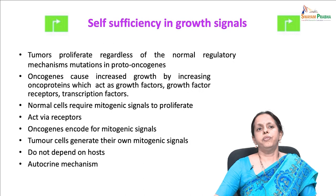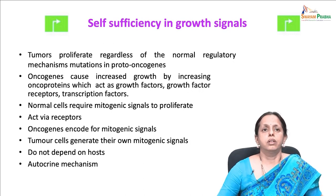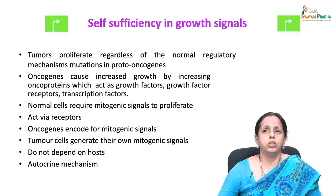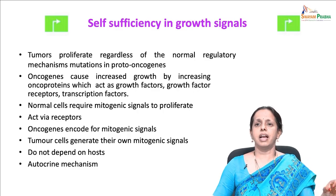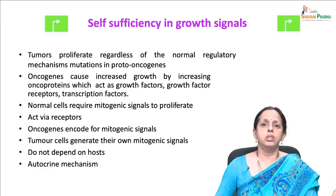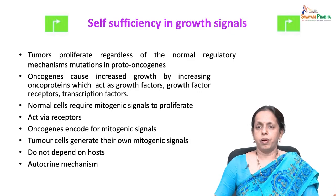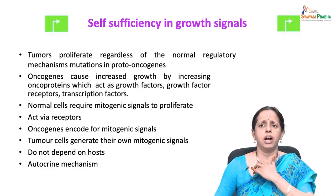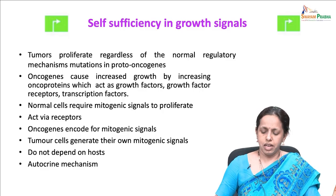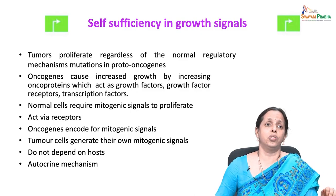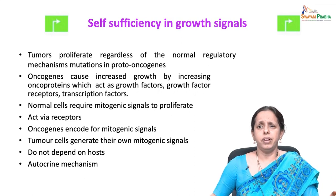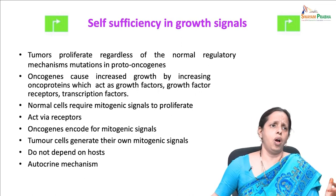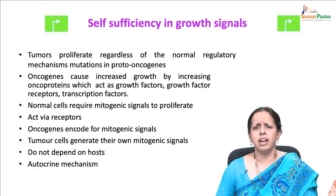Now we will discuss the first hallmark: self-sufficiency in growth signals. We have dealt with many proto-oncogenes earlier. The most fundamental trait for cancer cells is their ability to sustain chronic proliferation. Usually, normal cells carefully control the production and release of growth factors and growth-promoting signals so that there is no catastrophic multiplication or division of cells — CDKs and everything are systematically orchestrated.